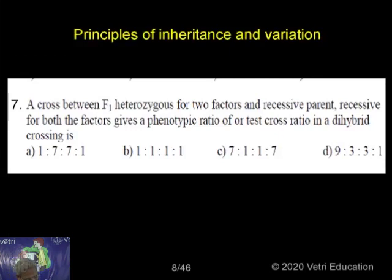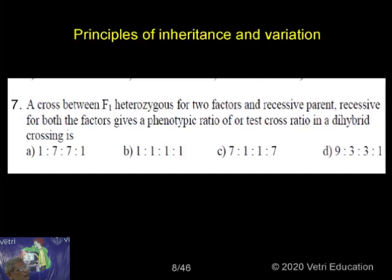The cross between F1 heterozygous for two factors and a recessive parent gives a phenotypic ratio — a test cross ratio. In a dihybrid cross, this is the cross between the F1 heterozygous plant and the recessive parent. This is a test cross; in other words, it is a question on the dihybrid test cross.